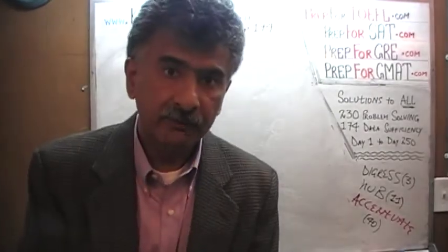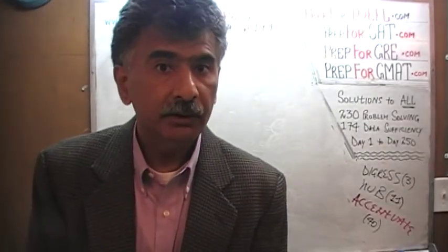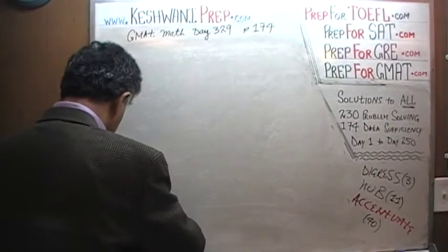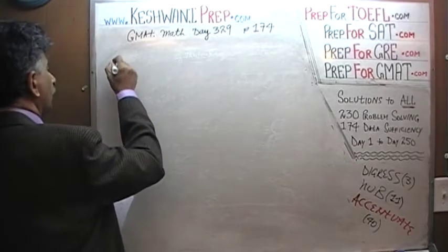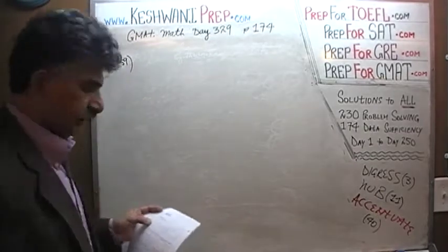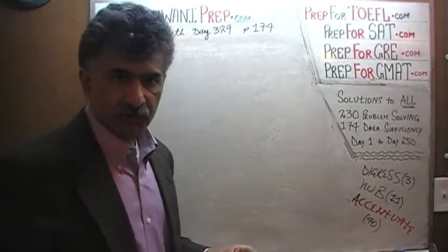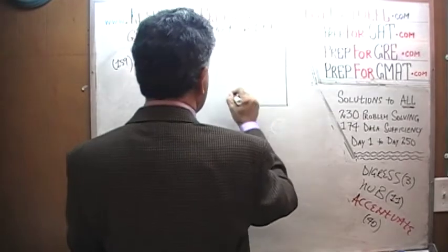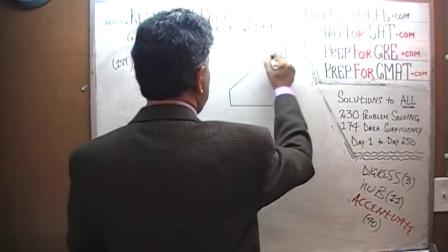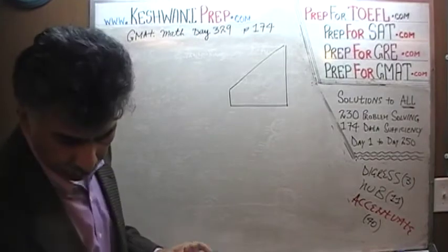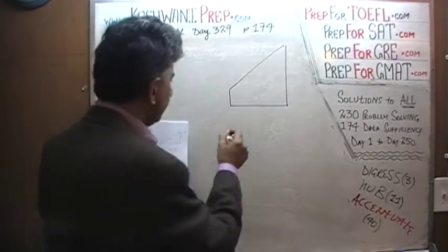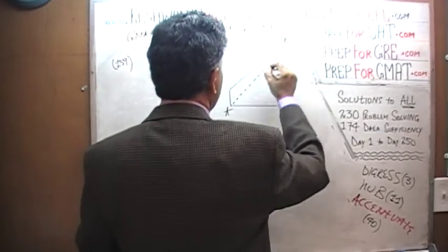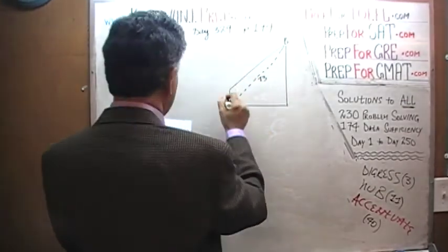Please turn to page number 174. The very first problem you see there in the second column is problem number 159. Problem number 159 is a pretty straightforward geometry question. Here is the picture that is given to us — it is a trapezoid. We are told that A to B is 13.